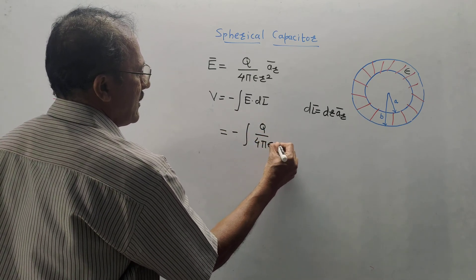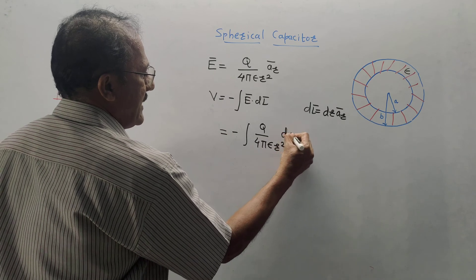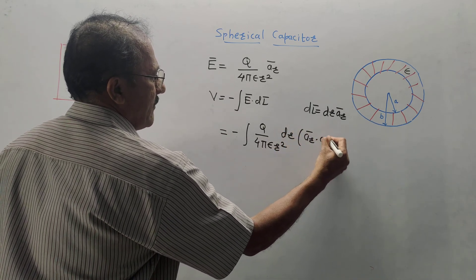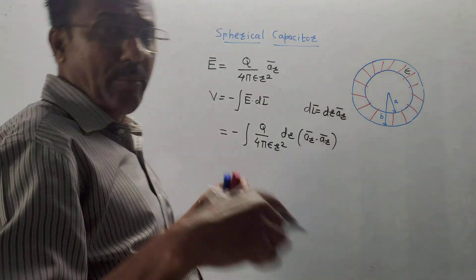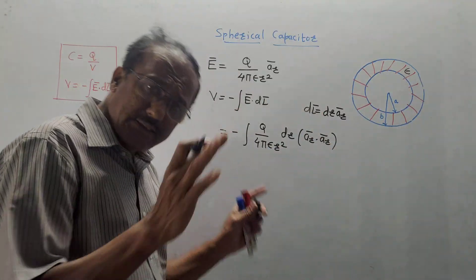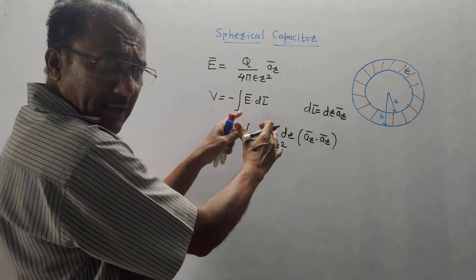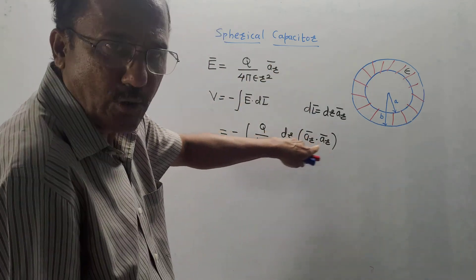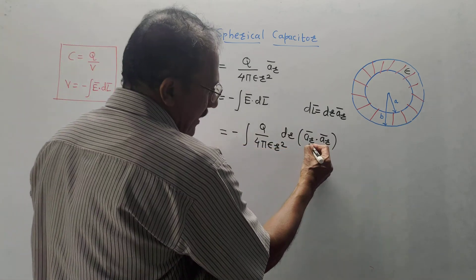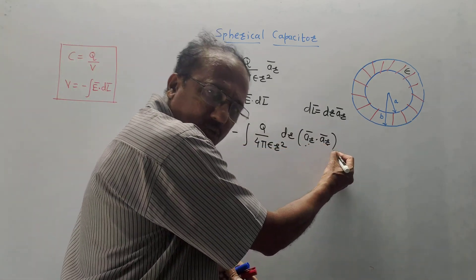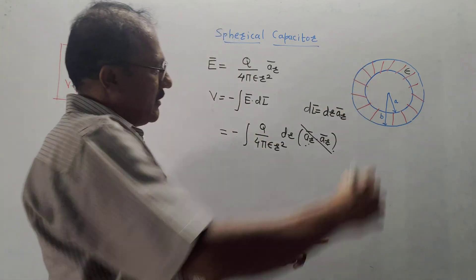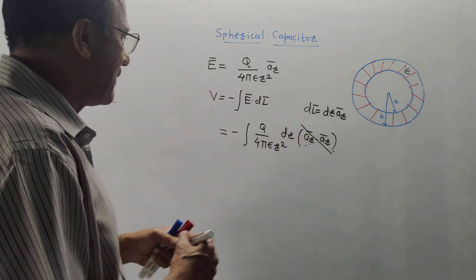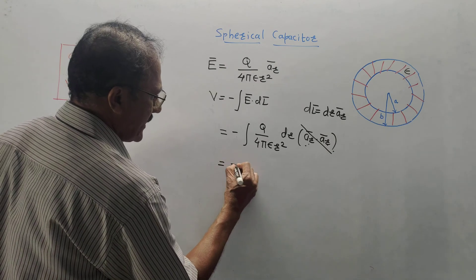When taking the dot product, multiply all scalar terms normally and then take the dot product of the unit vectors only. The dot product of a unit vector with itself equals 1, so â_r · â_r = 1. This term cancels, and taking constants outside the integral gives q/(4πε) ∫ 1/r² dr.